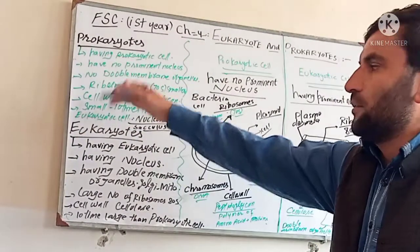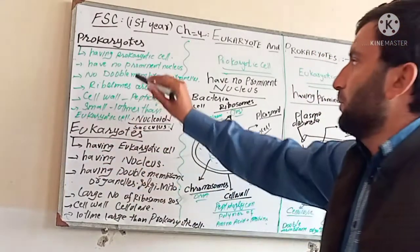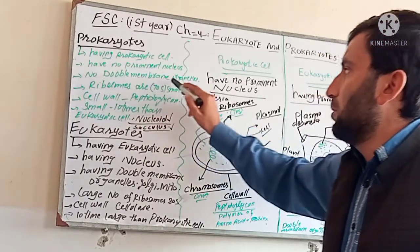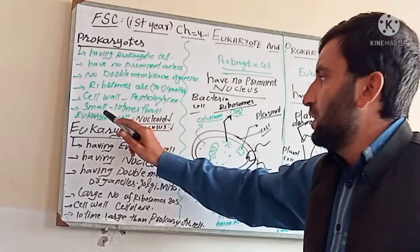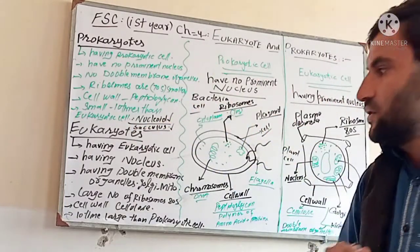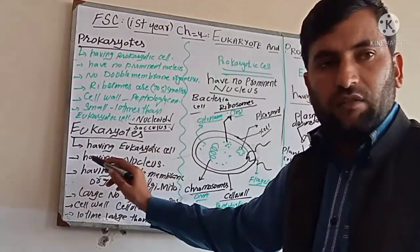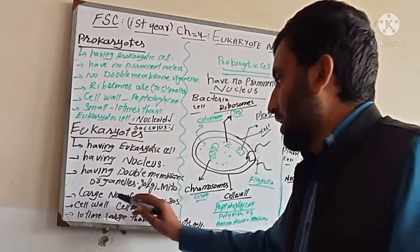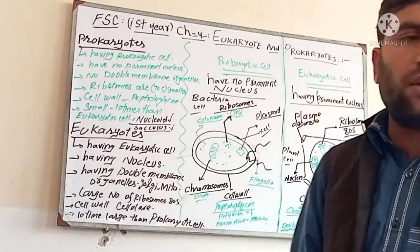I have written some differences you can see here. Prokaryotic cells have no prominent nucleus, no double-membrane organelles, ribosomes are 70S, cell wall is made of peptidoglycan, and they are about 10 times smaller than the Eukaryotic cell. Eukaryotes have a nucleus, double-membrane organelles like mitochondria and chloroplasts, ribosomes are 80S, cell wall made of cellulose, and are 10 times larger than the Prokaryotic cell.